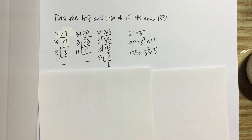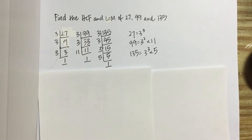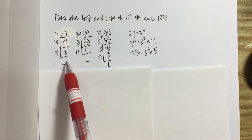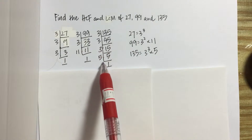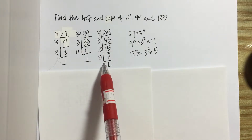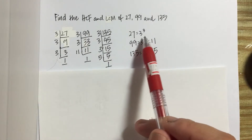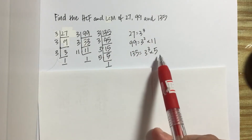The question says find the HCF and LCM of 27, 99, and 135. First we will carry out the prime factorization of each number. We express the factors in index notation form.